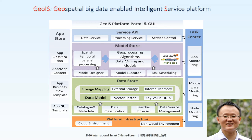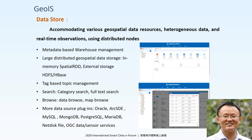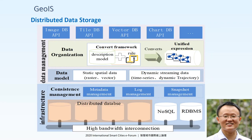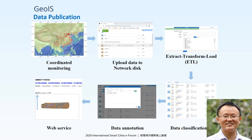In the data store of this infrastructure platform, we have a meta-database of warehouse management, data source using distributed nodes, tag-based topic management, search function, browse function, and many various data source plugins. We can use the distributed file system and distributed database technology to support the data storage, and it provides the Image DB API, Cloud DB API, Vector DB API, and Chart DB API. For data publication from data collected from in-situ sensors, we can upload data to the network disk, go through the ETL transformation, classification, annotation, and then publish them by the web service.